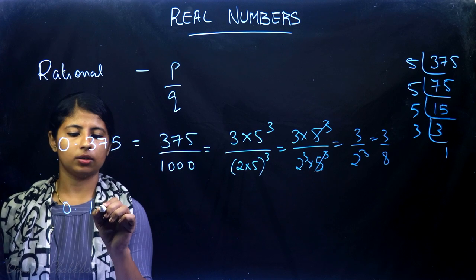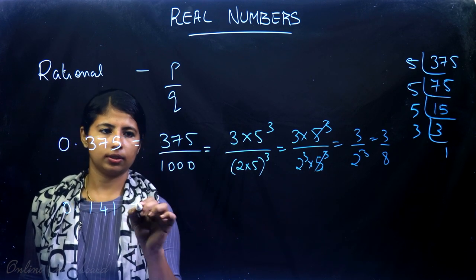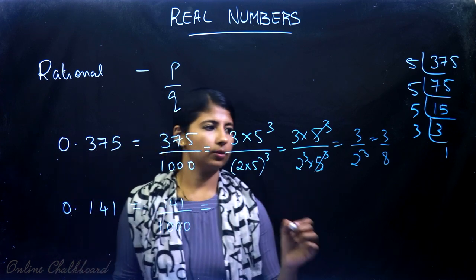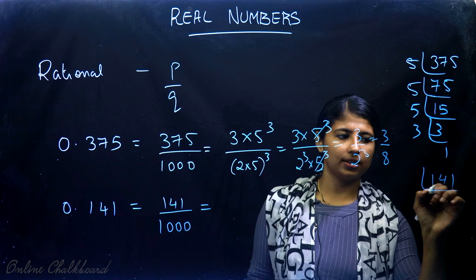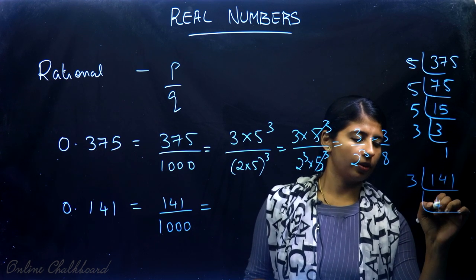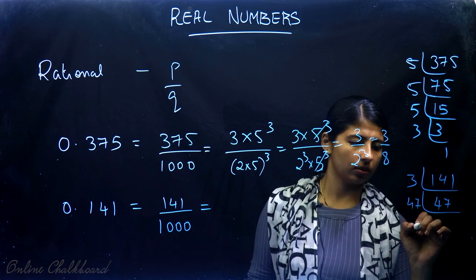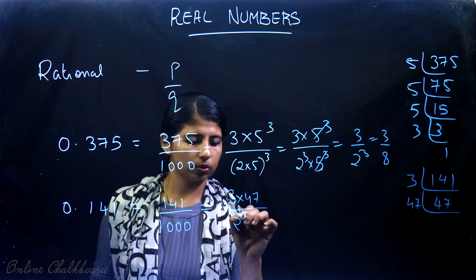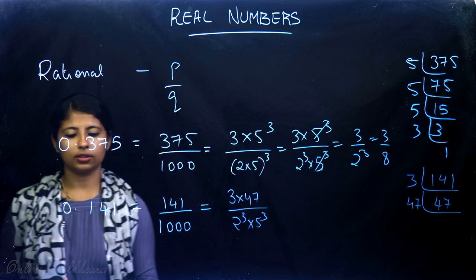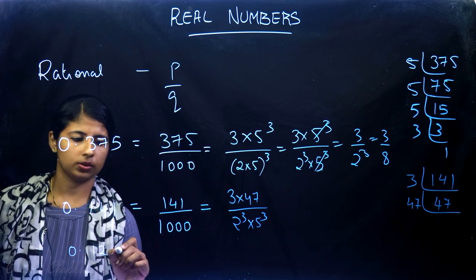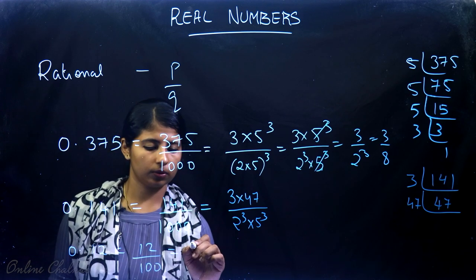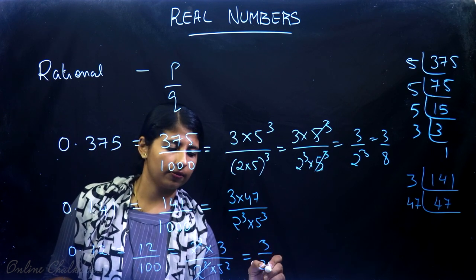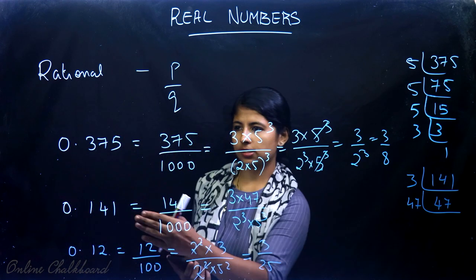Now consider 0.141. That is equal to 141 divided by 1000. The prime factorization of 141 is 3 into 47, where 47 is a prime number. So we get 3 into 47 by 2 cube into 5 cube. Let's also consider 0.12, that is equal to 12 by 100, which is 2 squared into 3 by 2 squared into 5 squared. So we get 3 by 25. This is the P by Q form of all these numbers.